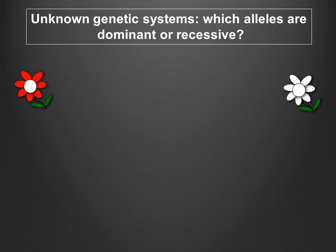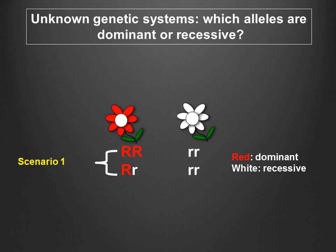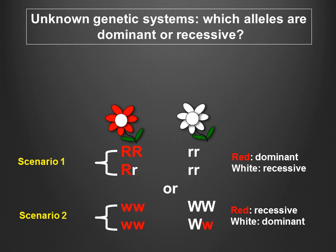Physically, only the phenotypes of the plants are apparent because you cannot see the genotype of each plant. This means that there are two alternate genetic scenarios. In one scenario, the red allele is dominant and the white recessive. And in the second scenario, the red allele is recessive and the white dominant. So under these scenarios, any one red flower or any one white flower could be a heterozygote, a homozygous dominant, or a homozygous recessive.